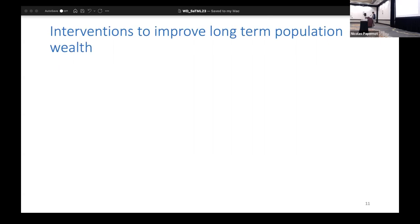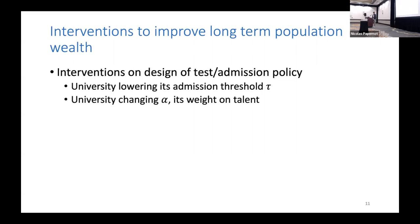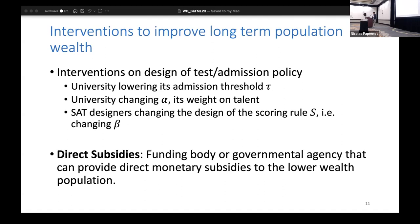What kind of interventions are we looking at here? We look at two sets of interventions. The first one is from the perspective of a university or from the SAT score designer's perspective. The second one is the perspective of a funding body or a government agency which provides some subsidy in each round for each generation.